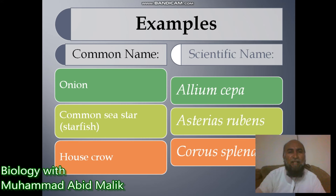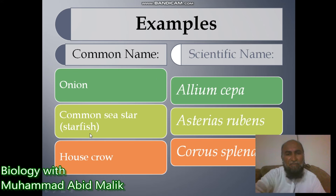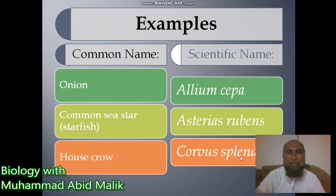Some examples: onion has the scientific name Allium cepa; common sea star (starfish) is Asterias rubens; house crow has the scientific name Corvus splendens; and man is Homo sapiens.